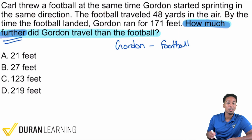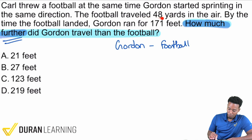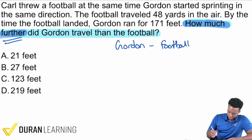Now we go to the story. Carl threw a football the same time Gordon started sprinting in the same direction. The football traveled 48 yards — I'll go ahead and highlight that in blue.